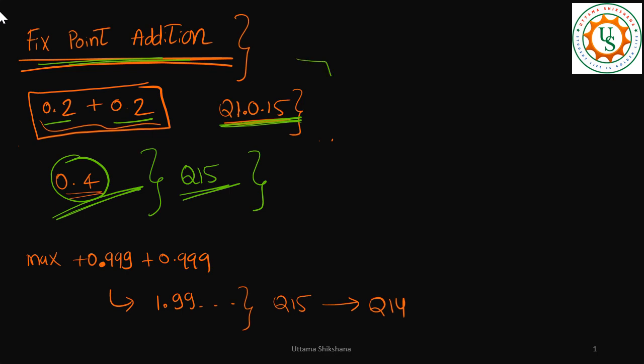But let me take another example: 0.55 plus 0.5. In this case, the result is 1.05. Is it lying in the range of Q15? No, right? The maximum value is plus 0.999.